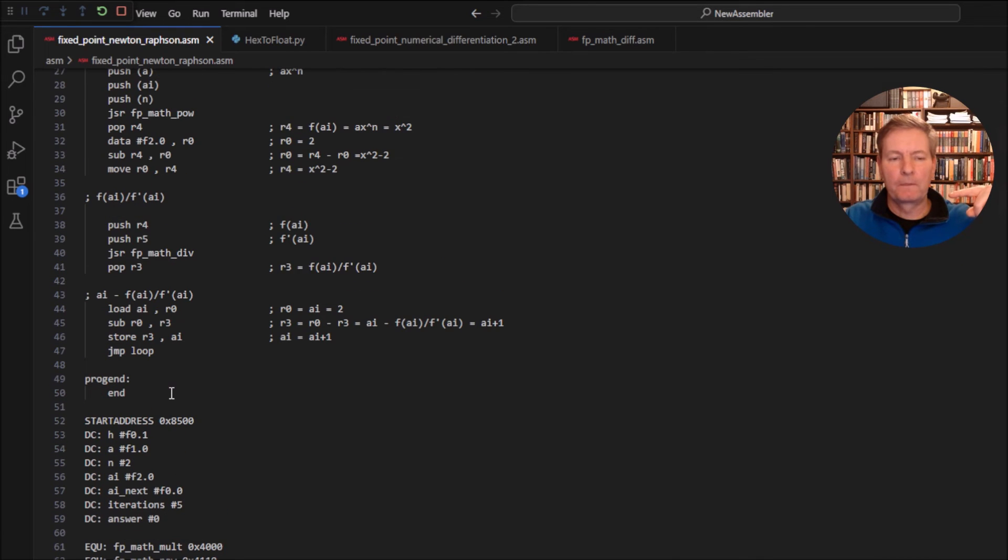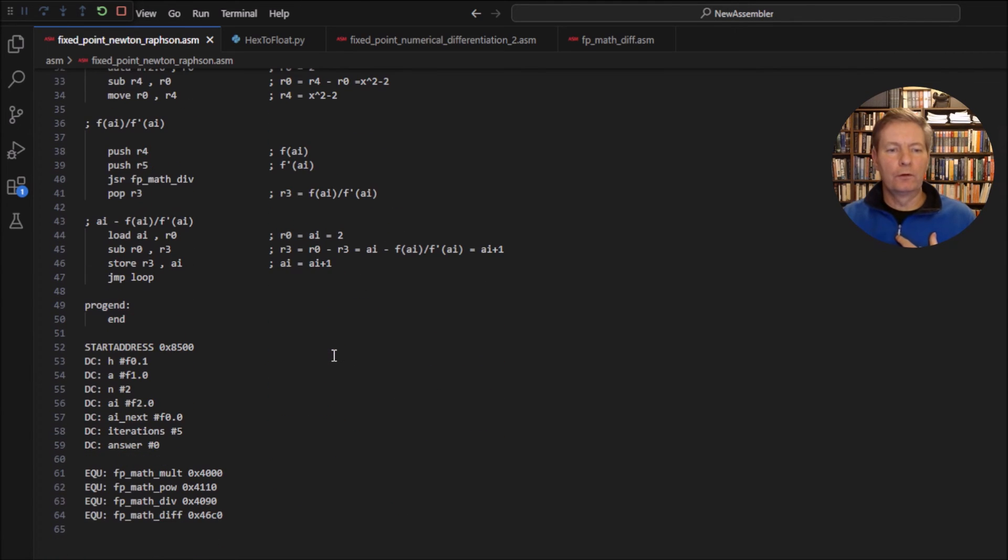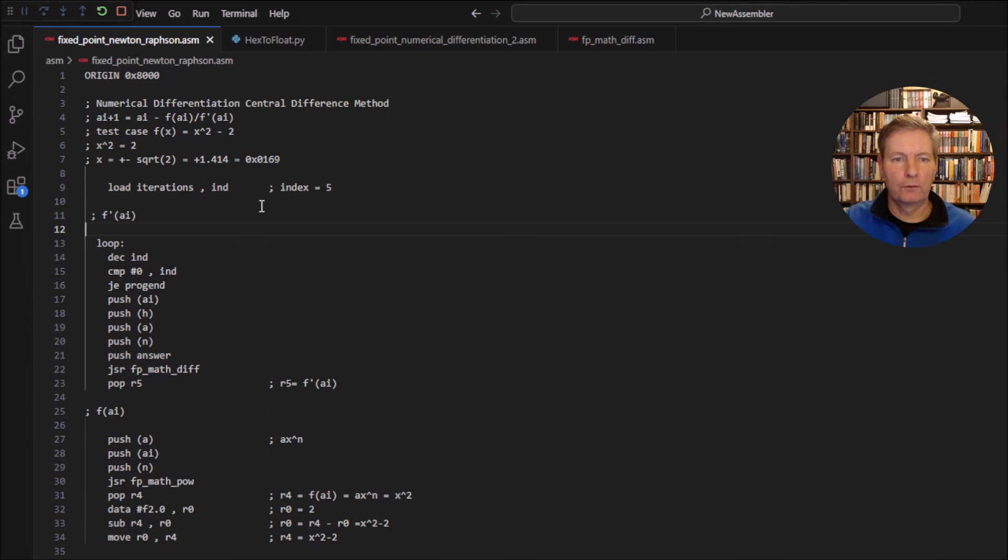And we're going to go round this a certain number of times. So we have to decide whenever the value that we've got is close enough to the root. Now a simple way of doing that for us at the moment is just to pick a number of iterations. So we'll just stick to five iterations of this particular loop. So that's the code for generating the Newton-Raphson for the x squared minus 2. And we expect to see the result 0x0169. So let's load this into our machine and see whether we actually get this result.